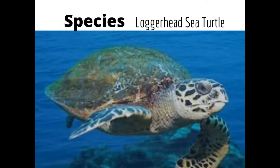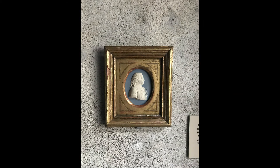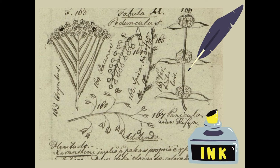Not only was Carl von Linnaeus a wonderful scientist, but he was also an artist. He would use drawings in his field notebook to organize the different types of plants and animals he found. He would make detailed notes about the different parts, and it helped him build his organization system.